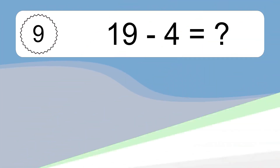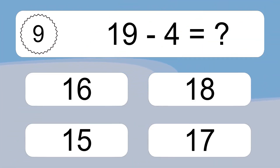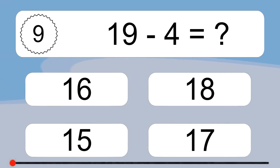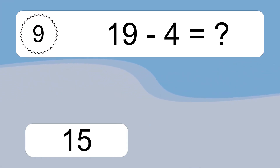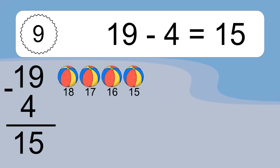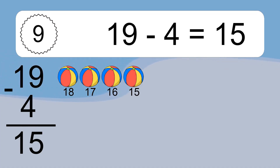19 minus 4 equals what? 19 minus 4 equals 15. Let's count it. 18, 17, 16, 15.